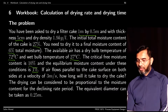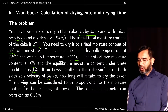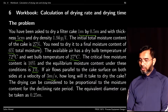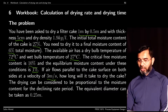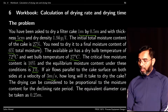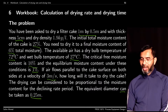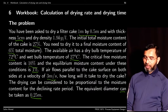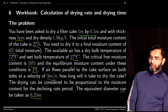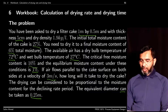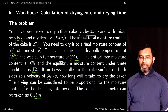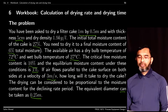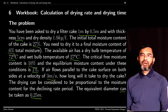Air flows parallel to the cake surface on both sides at a velocity of 3 m/s. We need to find how long it will take to dry the cake, where drying in the declining rate period is proportional to the moisture content. The equivalent diameter is taken as 0.25 m. The wet bulb temperature represents the condition where air becomes saturated with moisture — this is considered to be the temperature at the surface of the solid.